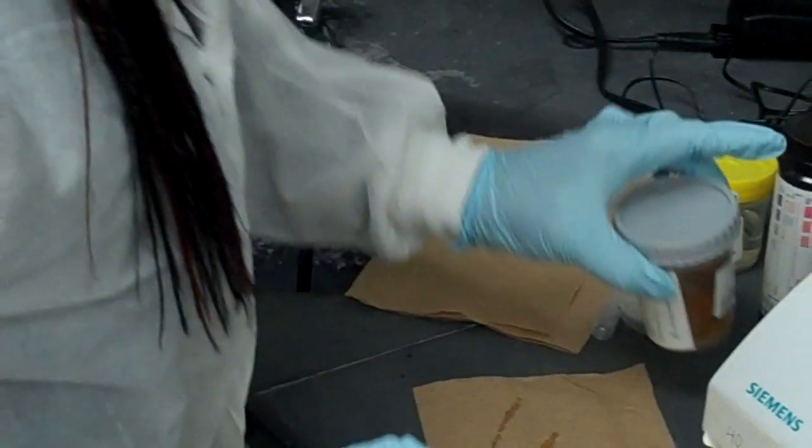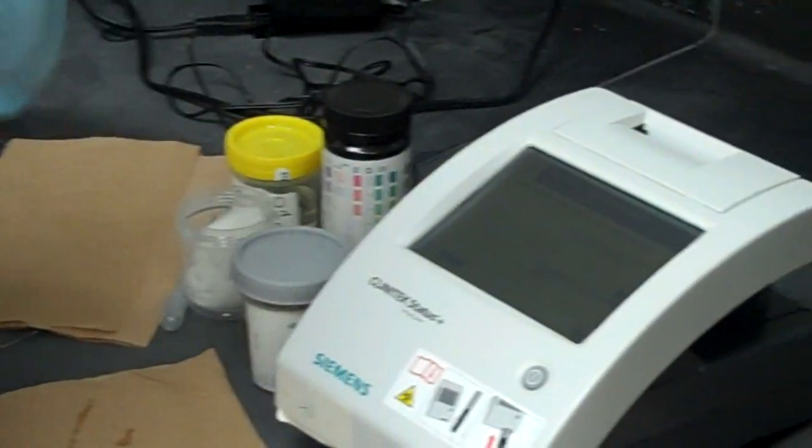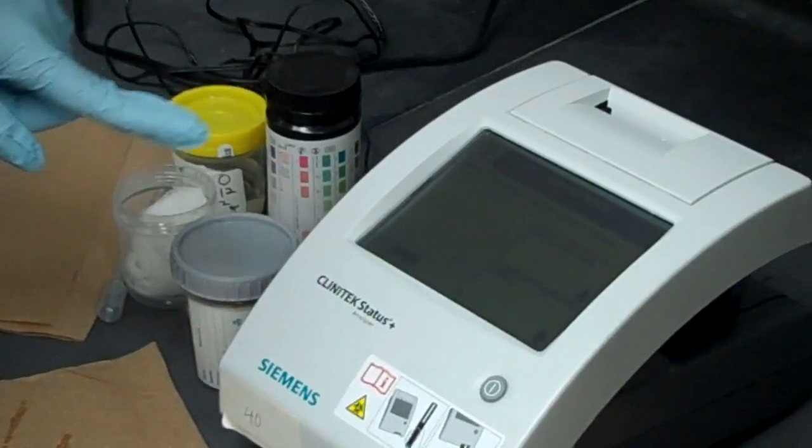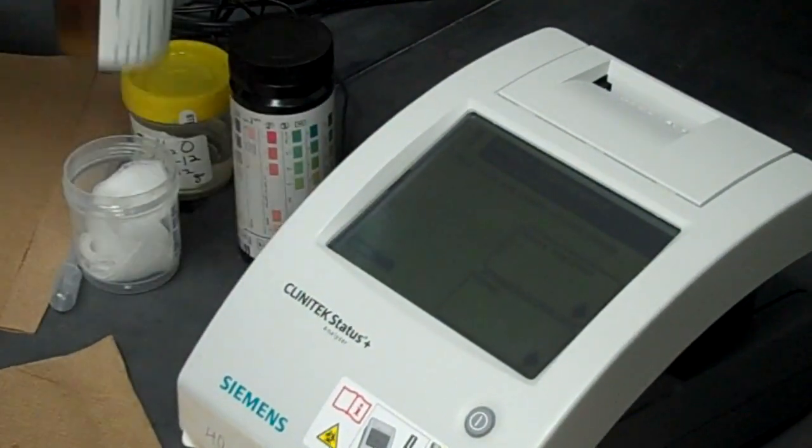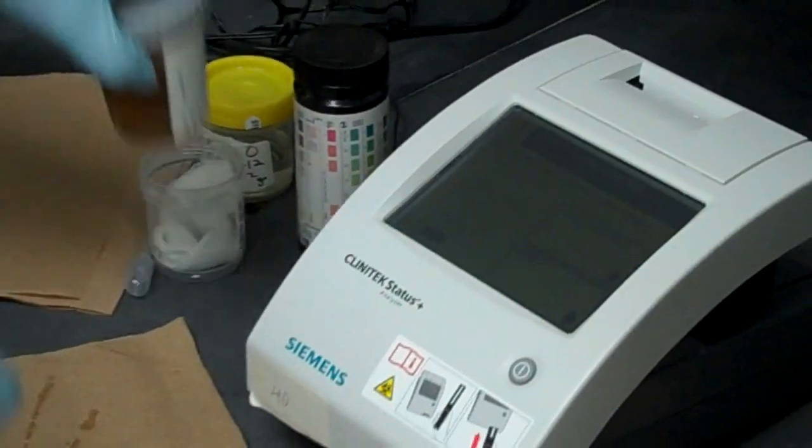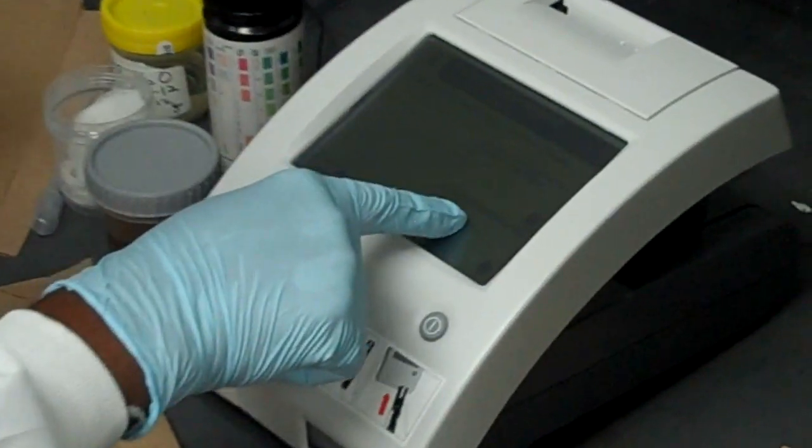While that's happening you look at the color of the urine. And you're going to select if the urine is clear. It's yellow and clear. You select that button. If not you select other. In our case our urine is brown. So you select other.